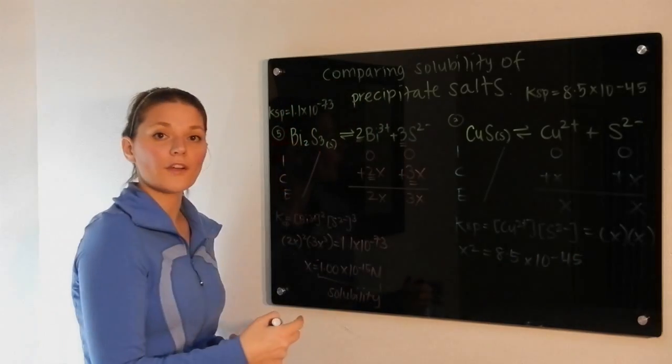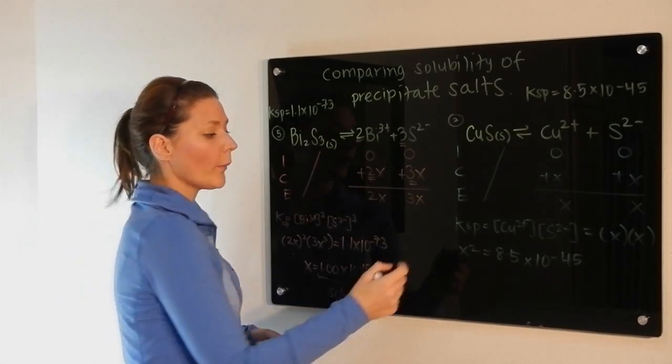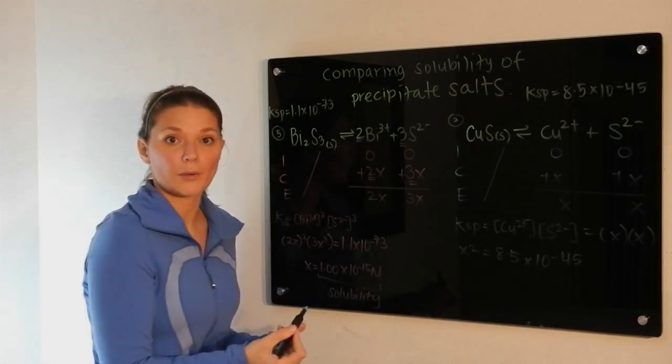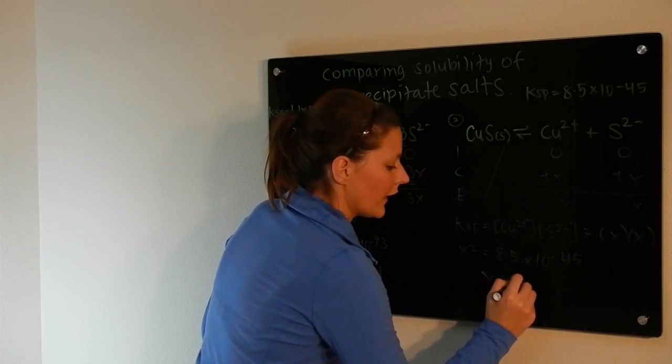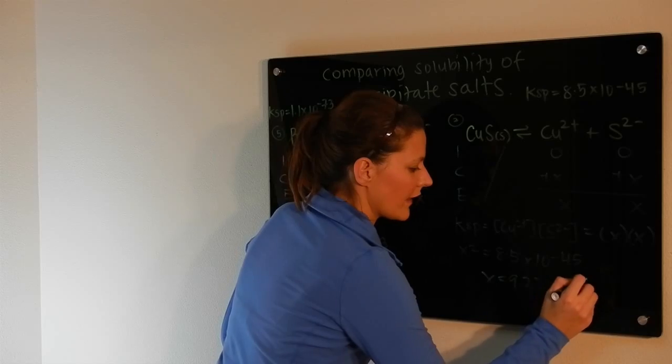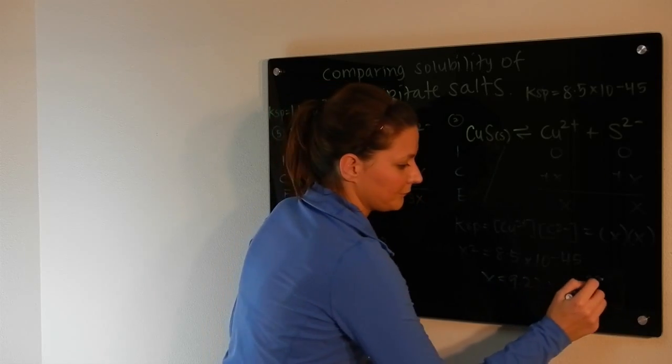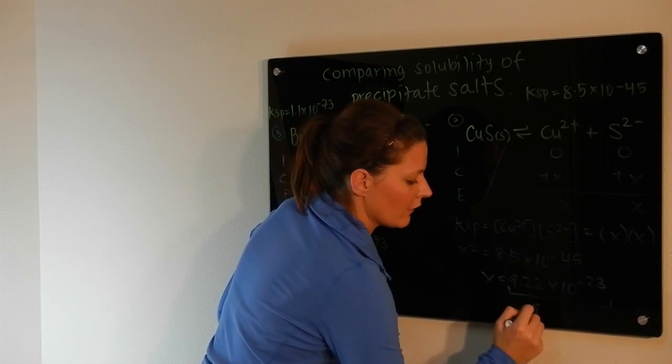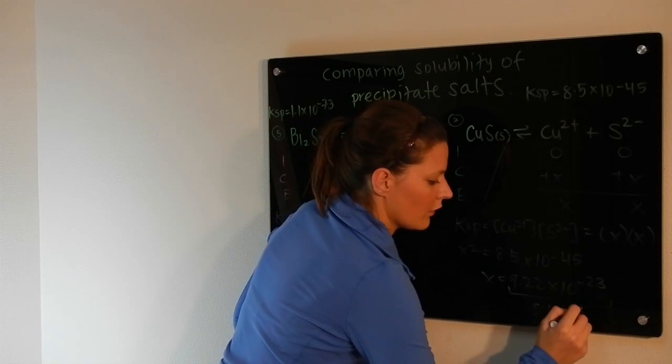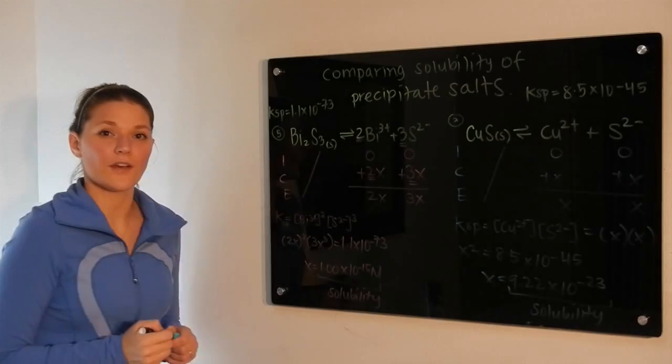So to solve for X, the solubility, all we have to do is take the square root of both ends. So when we solve for X in this case, we get a value of 9.22 times 10 to the negative 23rd. So now this here is the solubility of the copper 2 sulfide.